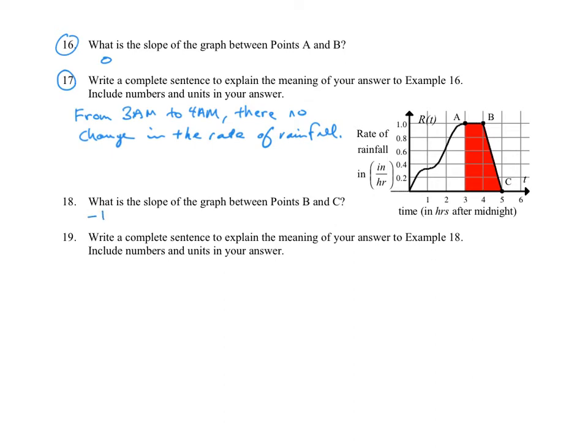What's the meaning of that? So between 4 a.m. and 5 a.m., the rate of rainfall decreases.